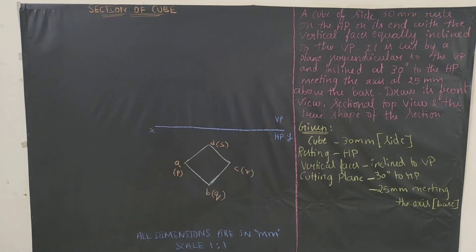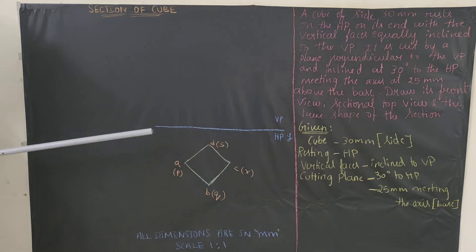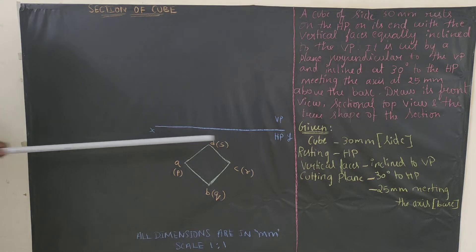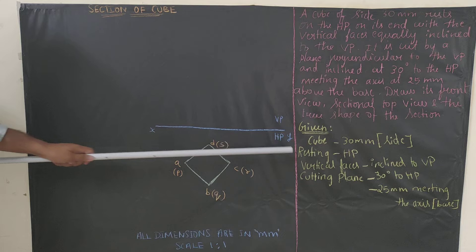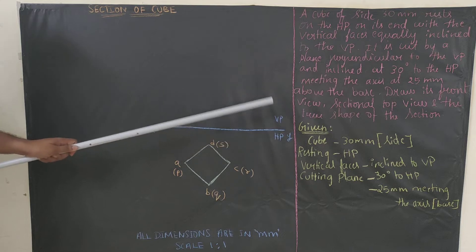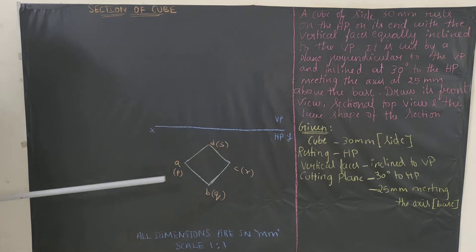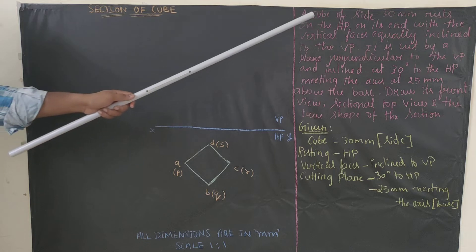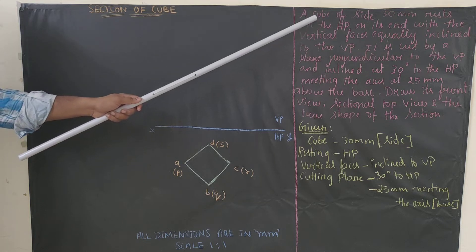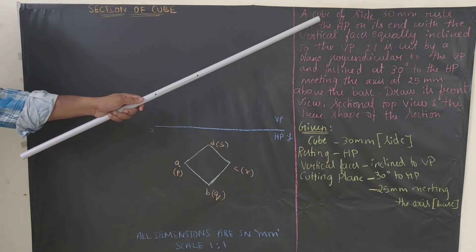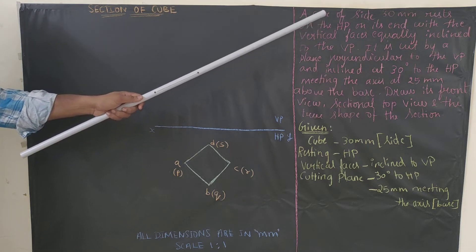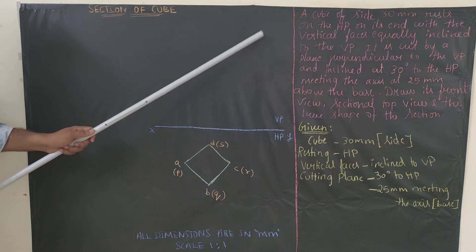The first step is to draw the reference axis. Draw the reference line and write X, Y, VP, HP. The next step is to draw the top view. For that, we take the help of the solid — which is a cube — so we will draw a square. We will be going with the second type.